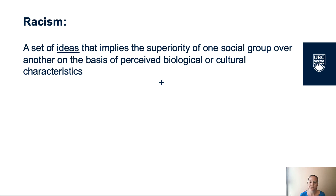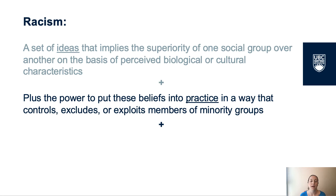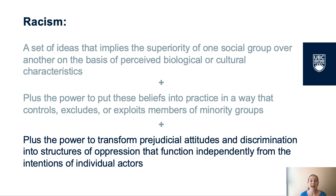So what is racism then? Racism is a set of ideas that implies the superiority of one social group over another on the basis of perceived biological or cultural characteristics, plus the power to put these beliefs into practice in a way that controls, excludes, or exploits members of minority groups, and the power to transform prejudicial attitudes and discrimination into structures of oppression that function independently from the intentions of individual actors. Racism therefore involves not just different treatment, but different treatment in color-conscious contexts of power. These contexts often limit opportunities or privileges.